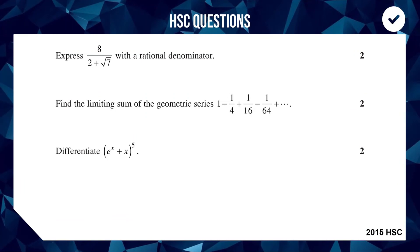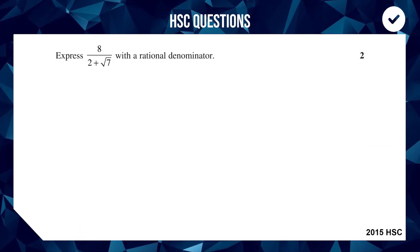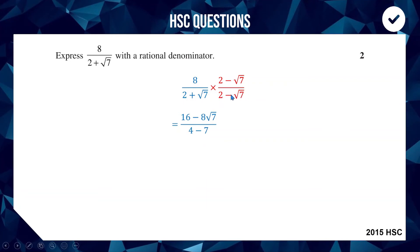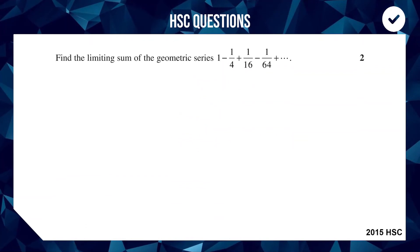I found a question from the 2015 HSC and decided to do the question above and below it for revision. Hit pause and see how many of these six marks you'd get. For the first part, to express with a rational denominator we multiply top and bottom by the conjugate of the bottom. The conjugate of (2 + √7) is (2 − √7). On the top: 8×2 = 16 and 8×√7 = 8√7. On the bottom, using difference of squares: 4 − 7 = −3.